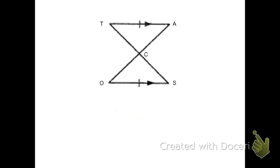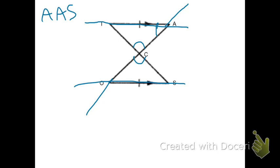Let's prove that triangles TAC and SOC are congruent using both Angle-Side-Angle and Angle-Angle-Side. First, for AAS: angle TCA and angle SCO are congruent because they're vertical angles. Also, since two lines are parallel and this is a transversal, the two marked angles are alternate interior angles, so they're congruent as well. Now I have angle-angle-side of one triangle congruent to angle-angle-side of another, so triangle TAC is congruent to triangle SOC by AAS.